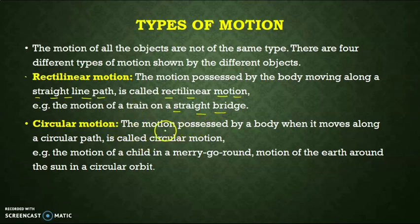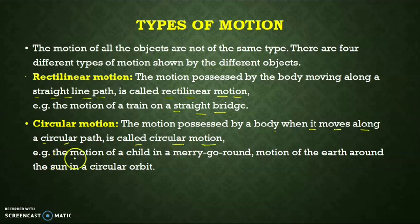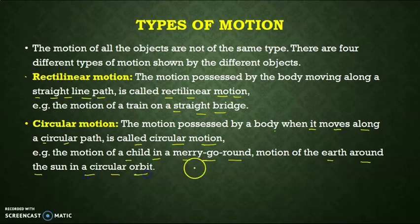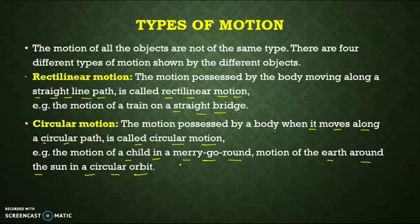Next is circular motion. The motion possessed by a body when it moves along a circular path is called circular motion. For example, the motion of a child in a merry-go-round, the motion of the earth around the sun in a circular orbit, and the motion of the needle of a clock are all examples of circular motion.